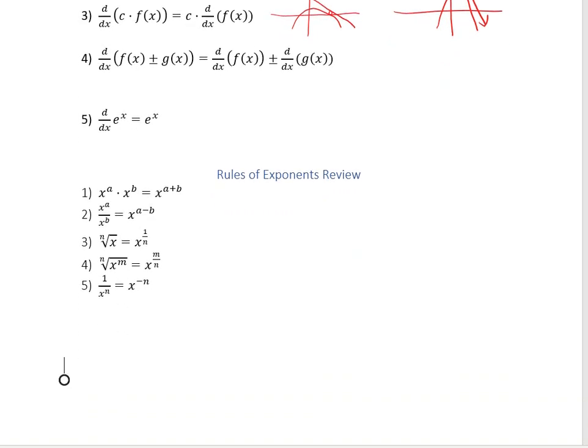Last but not least, probably one of my favorite derivative rules of all time: the derivative of the function e to the x — that's the exponential function, the natural number e — is just itself, e to the x.